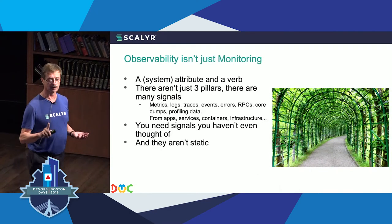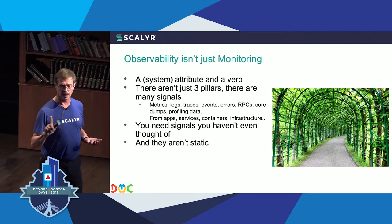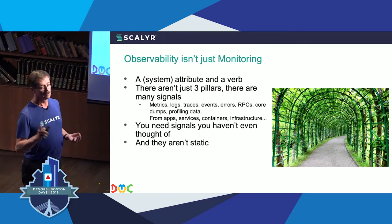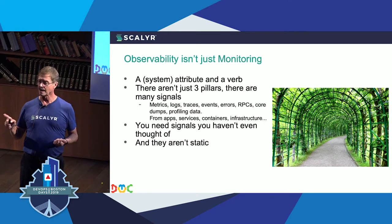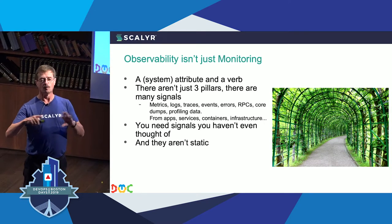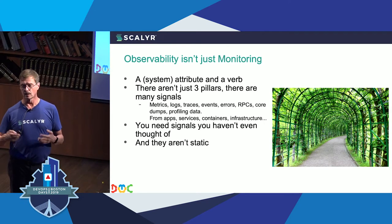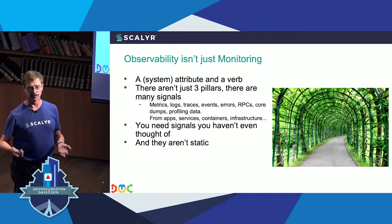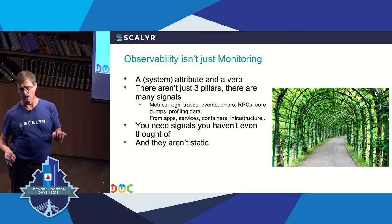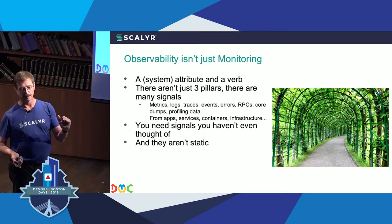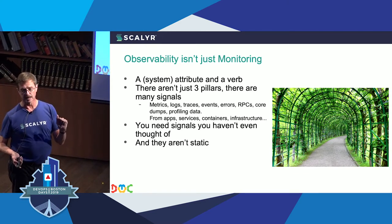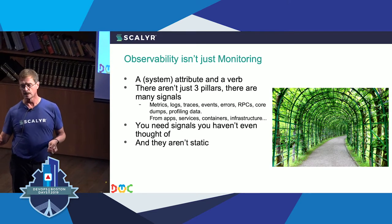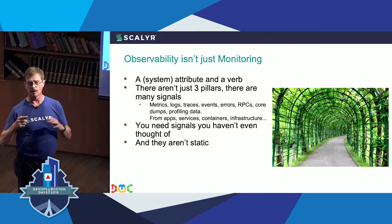It's not just monitoring — observability is more than just monitoring. The problem with observability is that we haven't set up what we need to observe. There are lots of potential signals. The big three are logs, traces, and metrics, but there can also be stack traces, core dumps, and all sorts of other things.